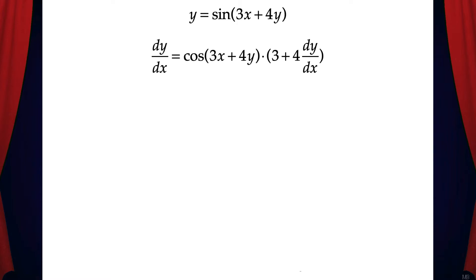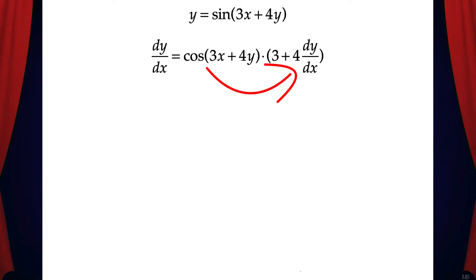which is 3 plus 4 dy/dx. Now what we need to do is solve for dy/dx. But as you can see, there are two dy/dx terms in our equation, so we need to group them together first. In order to do this, we need to break apart the quantity of 3 plus 4 dy/dx. So let's distribute cosine(3x + 4y) times 3 plus cosine(3x + 4y) times 4 dy/dx.